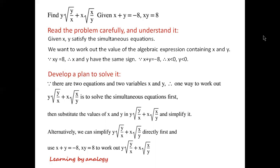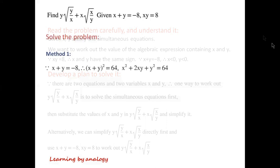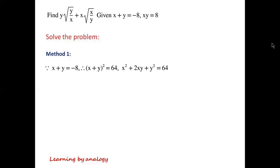To work out y root of y over x plus x root of x over y, because x plus y equals minus 8, we have x plus y all squared equals 64. Simplifying, x squared plus 2xy plus y squared equals 64, so x squared plus y squared equals 64 minus 2xy equals 64 minus 16 equals 48.